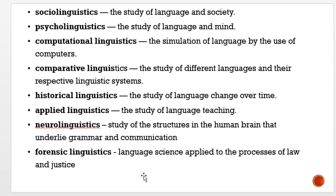We will conclude this video by looking at different types of linguistics. There are many specializations within linguistics. One is sociolinguistics, which is the study of language and how it functions within a society. Within a society, according to status, trade, and the area in which people live, people have different kinds of language, different dialects, registers, etc. All these come under sociolinguistics.